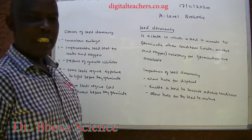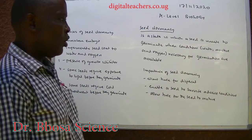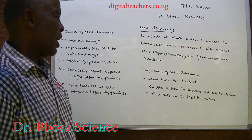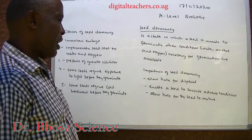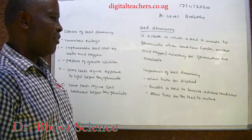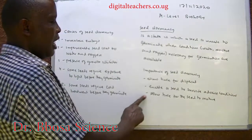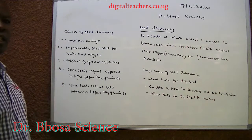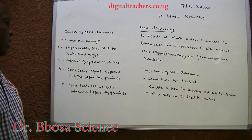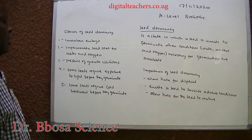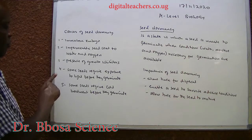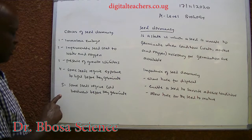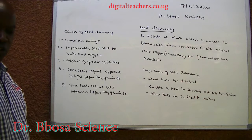Seed dormancy is a state in which a seed is unable to germinate even when conditions are available. Importance of seed dormancy: allows time for dispersal; enables seeds to survive adverse conditions; allows time for the seed to mature. Causes of seed dormancy: immature embryo; impermeable seed coat to water and oxygen; presence of growth inhibitors; some seeds require exposure to light before they germinate; some seeds require cold treatment before they germinate.